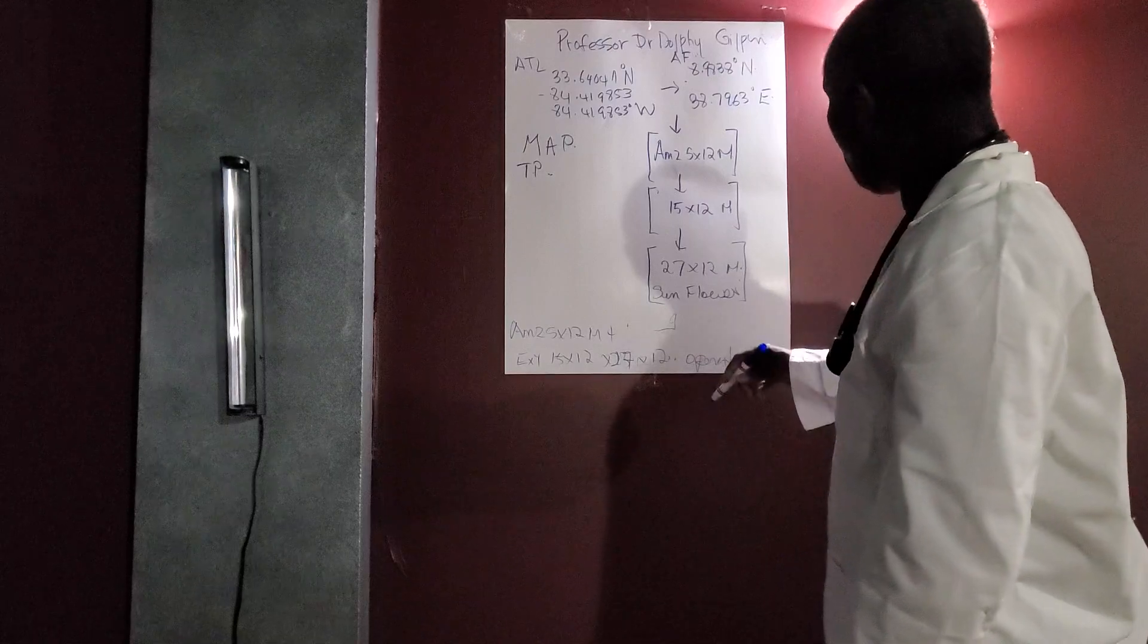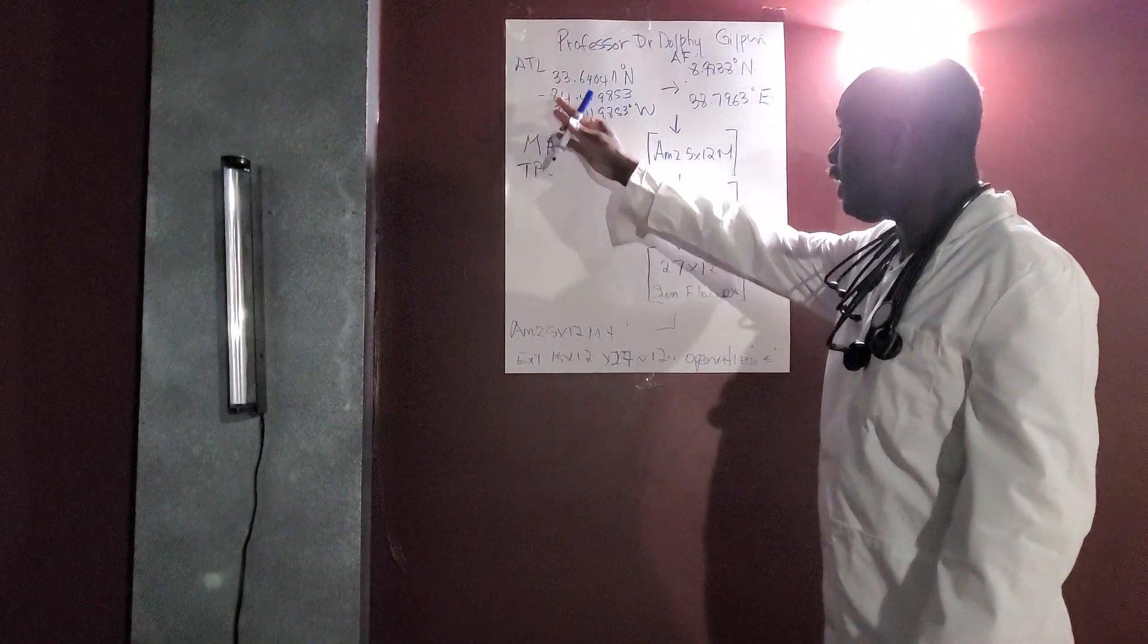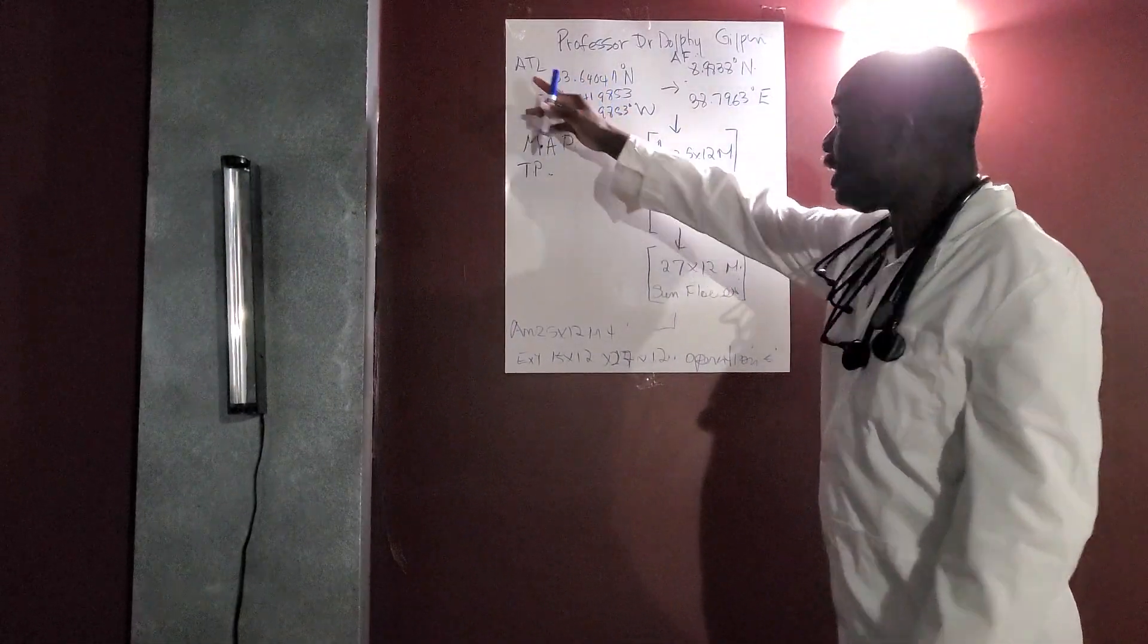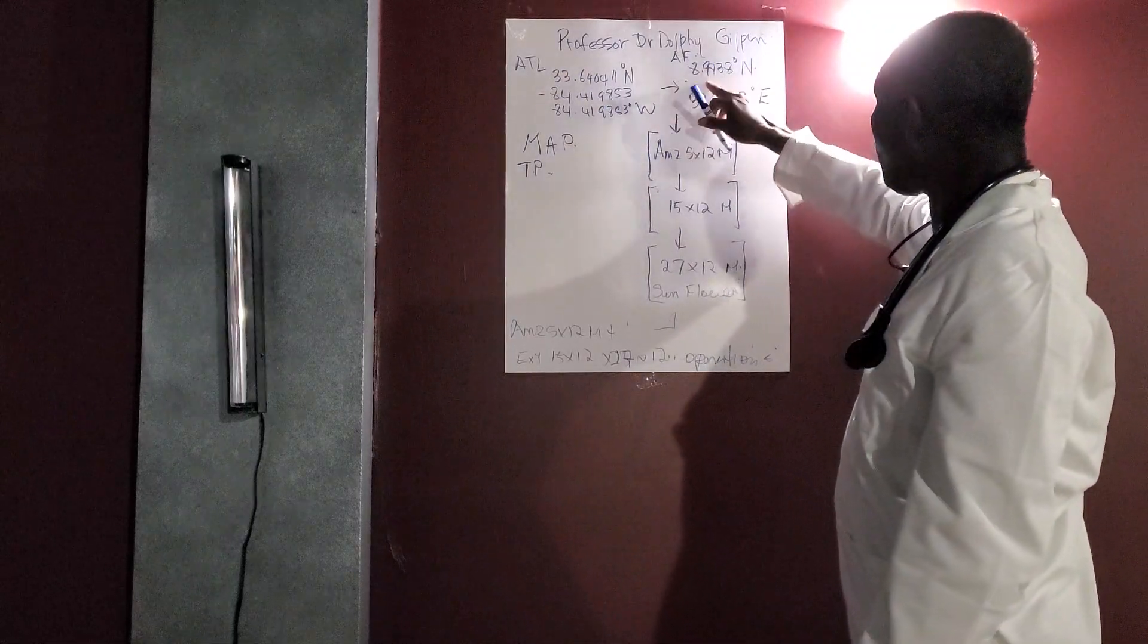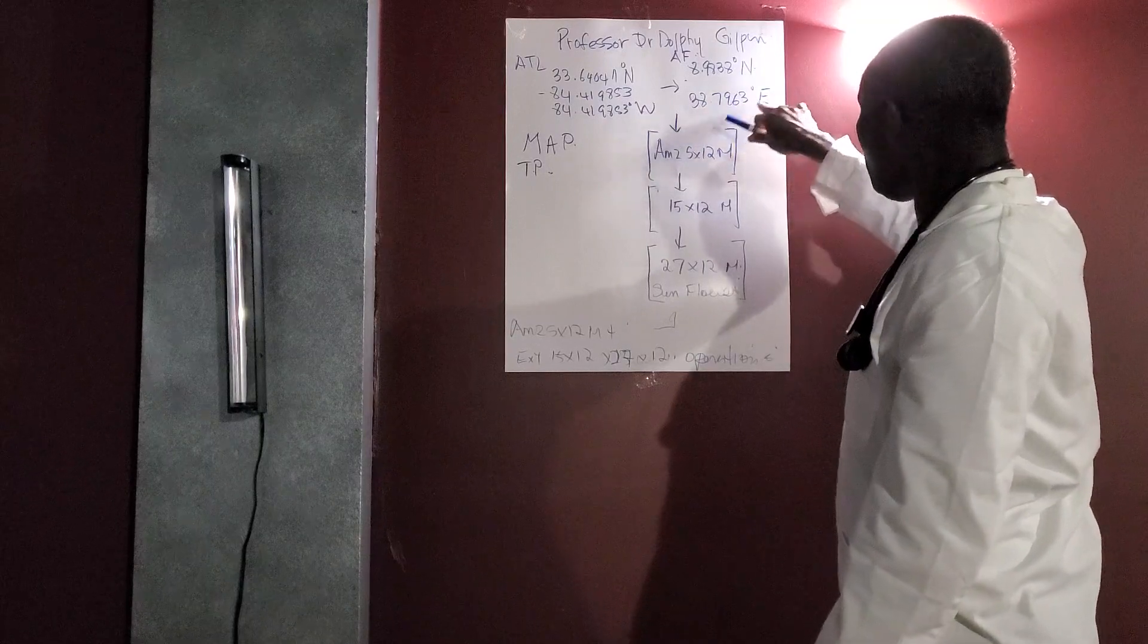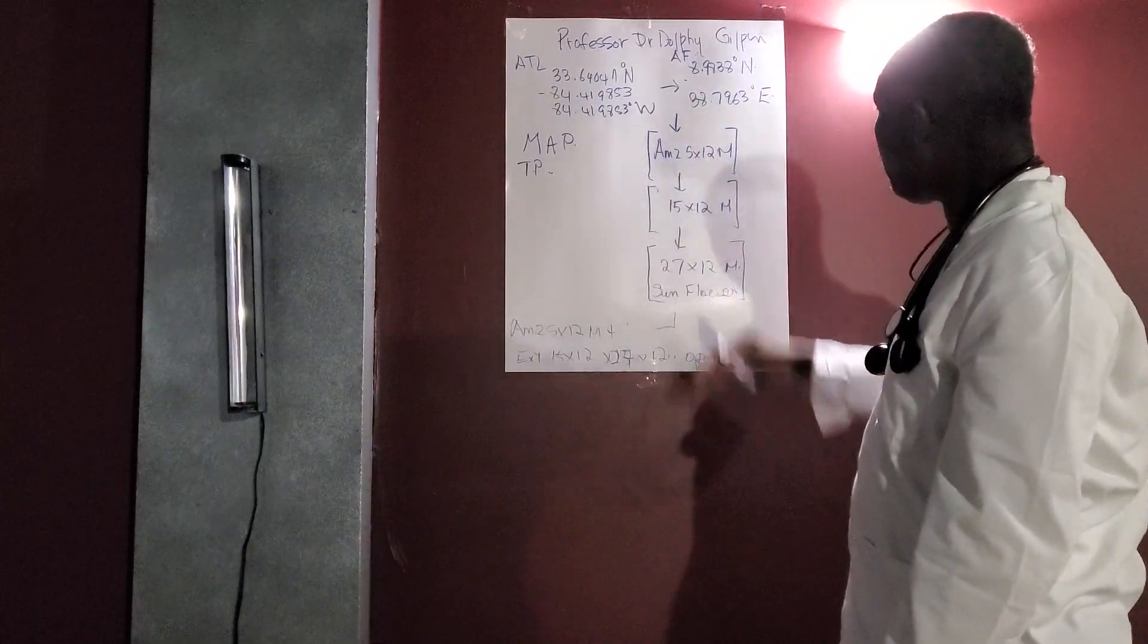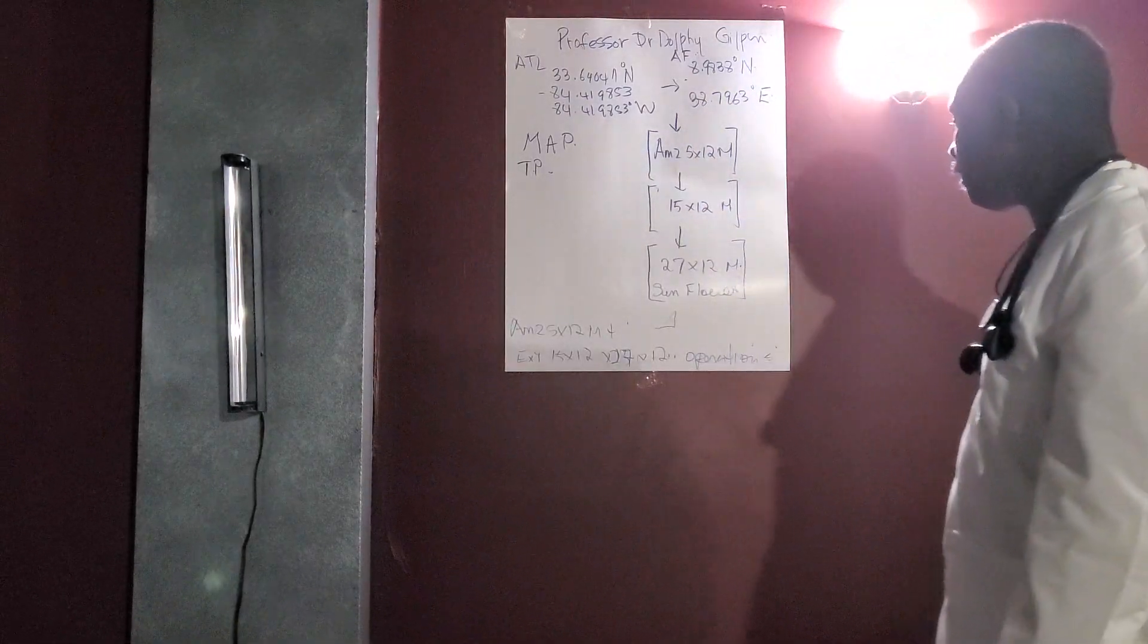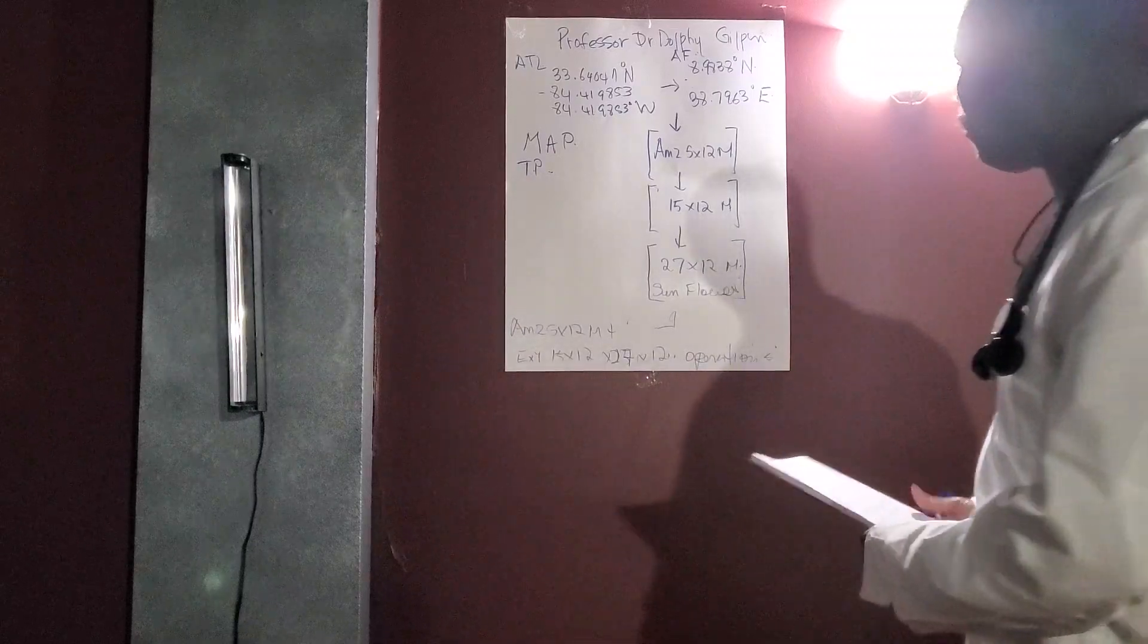So, simply, we started off at this coordinate at ATL, and we finish up at 8.9838 degrees north, 38.7963 east, and we do our operation.